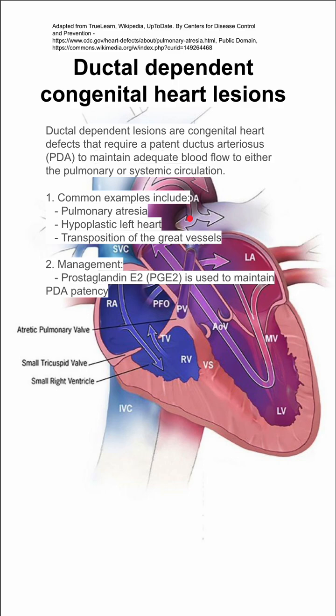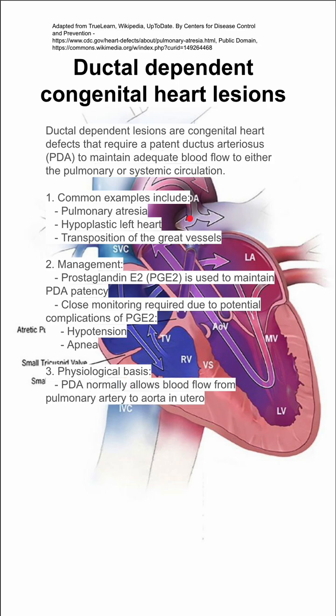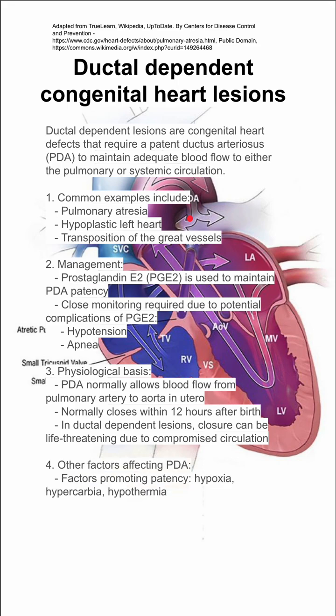The management of congenital heart lesions that are ductal dependent includes giving prostaglandin E2, which is used to maintain patency. Close monitoring is also required because there are complications of prostaglandin, like hypotension and apnea. The basis here is that the PDA normally allows for blood flow from the pulmonary artery to the aorta in utero, and it normally closes 12 hours after birth. In ductal-dependent lesions, these closures can be life-threatening due to compromised circulation.